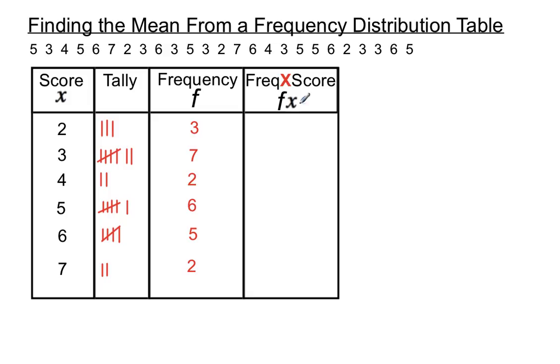So that's really our total column, this fx column, and the f column is really the number of scores we have. So in the end what we're doing is finding the total of the scores and dividing by how many there are.